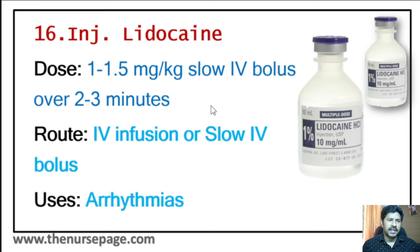Twenty-second injection is magnesium sulfate. Dose is 1 to 2 gram slow IV. Route is IV infusion. Uses include eclampsia and preeclampsia, torsades de pointes (cardiac arrhythmia), and hypomagnesemia.